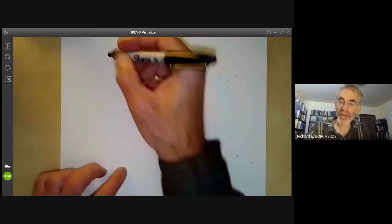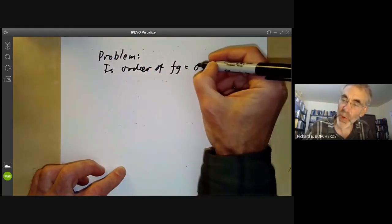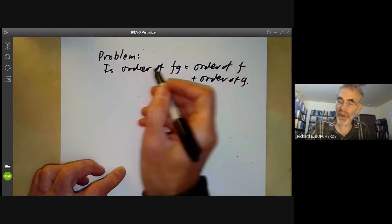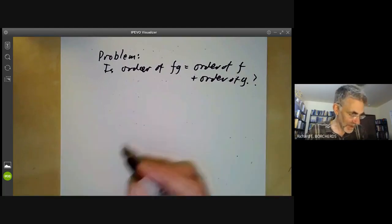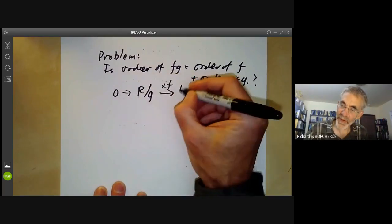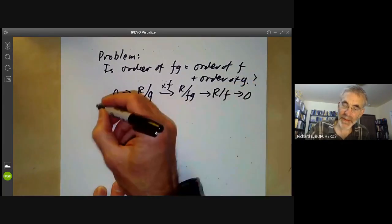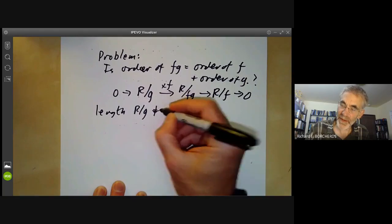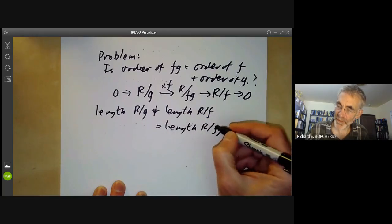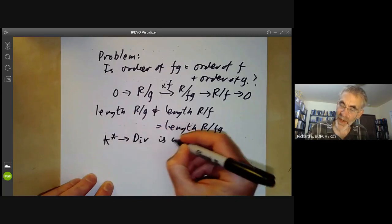Now we have the following problem: Is the order of FG equal to the order of F plus the order of G? This follows by looking at the following exact sequence. We take 0 goes to R over G, multiply by F to get R over FG, then map to R over F equals zero. So the length of R over G plus the length of R over F is the length of R over FG, which is what we wanted.